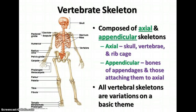All vertebral skeletons are variations on a basic theme. When you look at a frog skeleton, a lizard skeleton, or a bird skeleton, the bones are pretty much the same. They are shaped a little bit differently and some might be fused together. For instance, in the frog, rather than a radius and an ulna, they have a fused bone called a radio ulna. But the basic pattern is the same in all vertebrate skeletons.